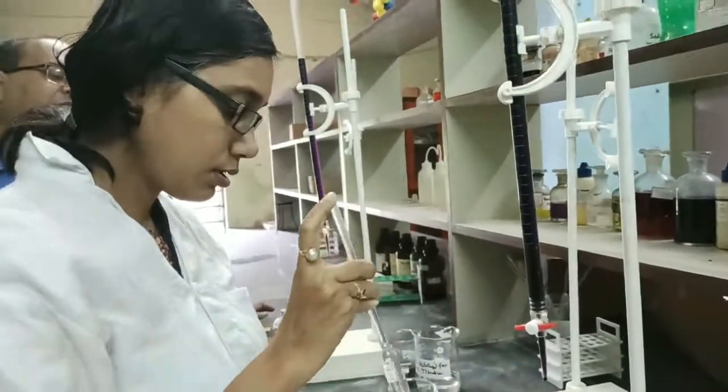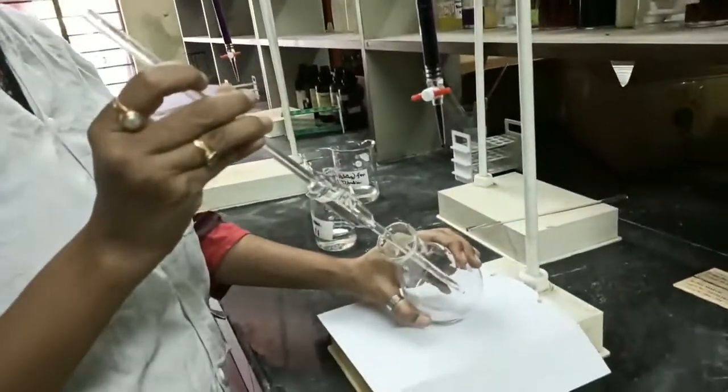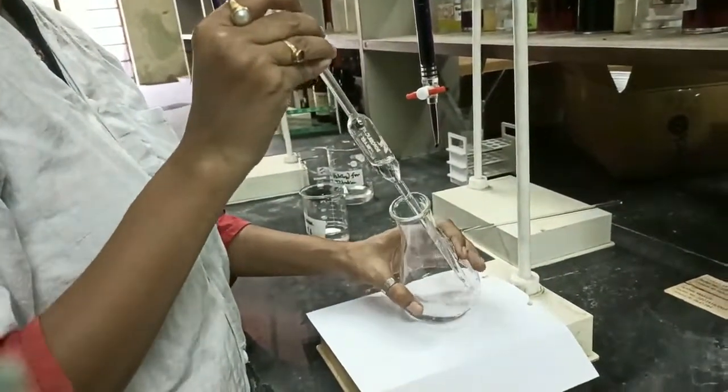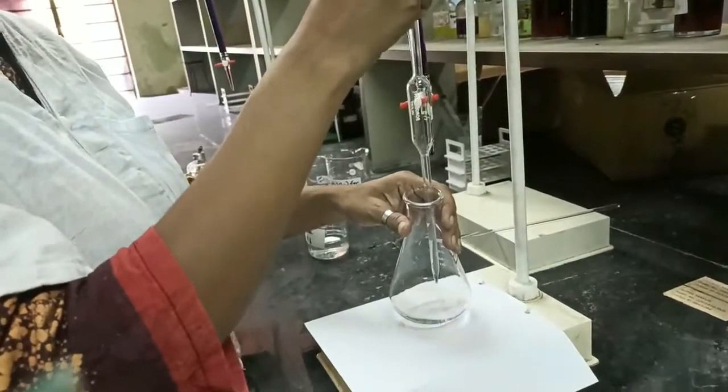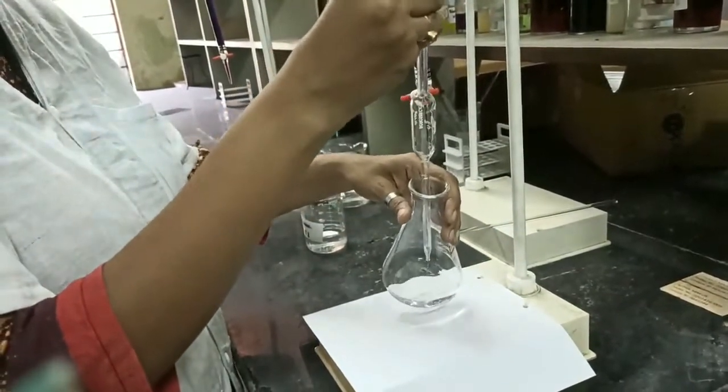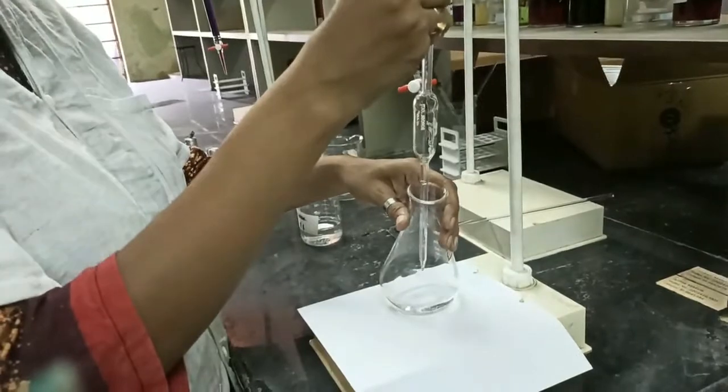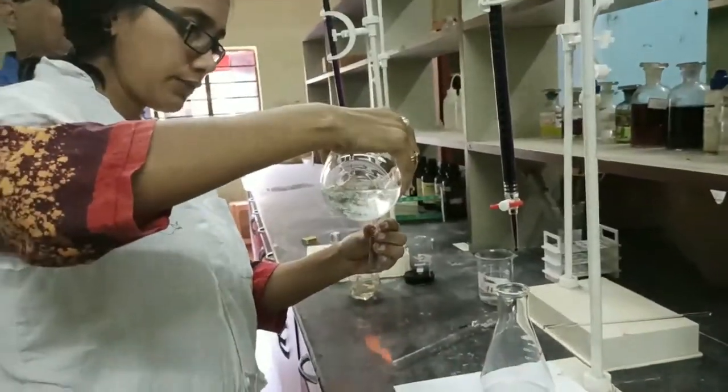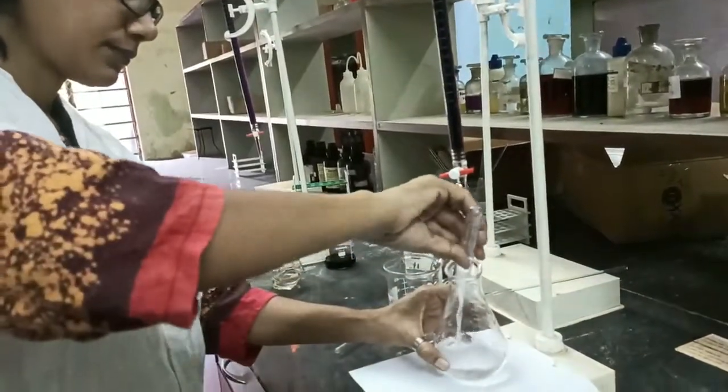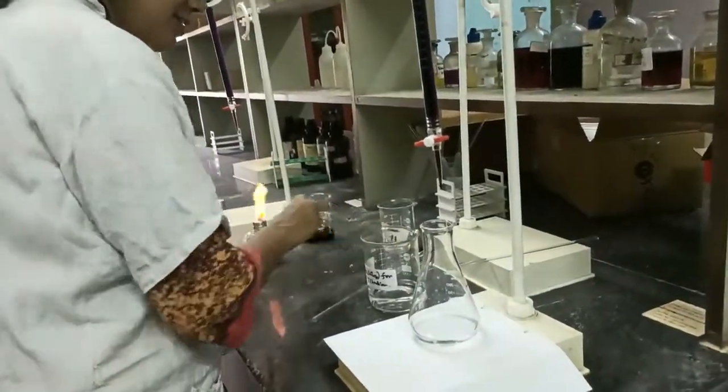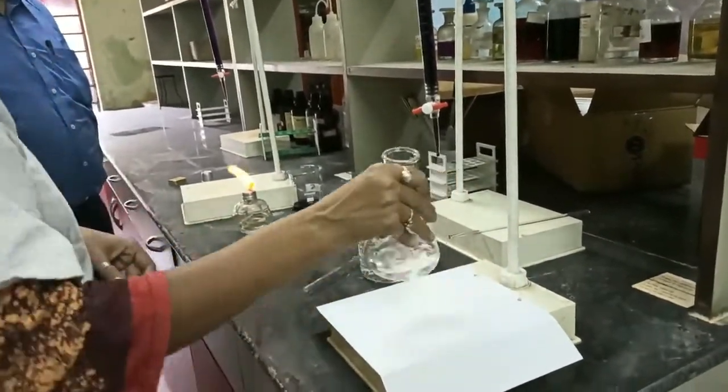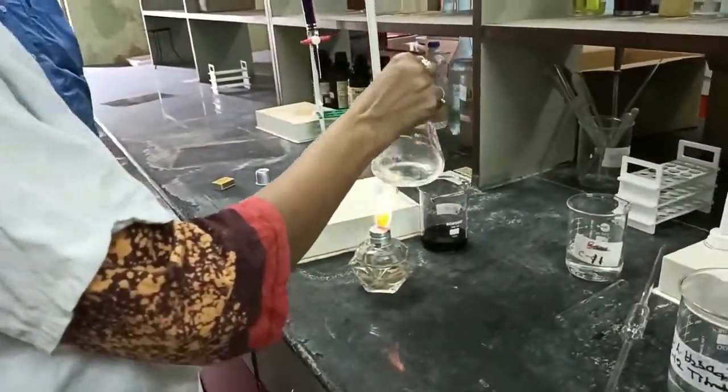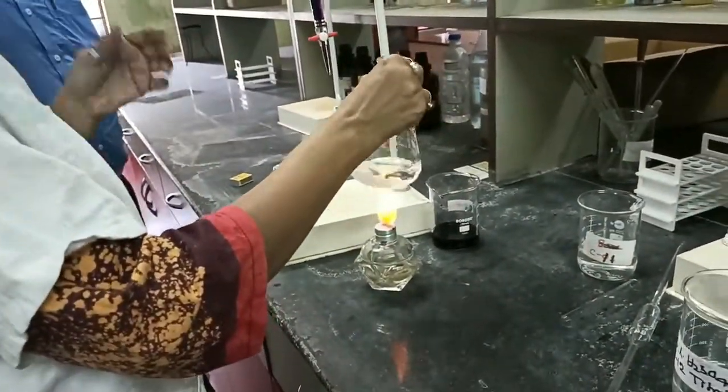The reaction is acid catalyzed. So we are taking one test tube of dilute sulfuric acid and adding it to the oxalic acid solution. Now we need to heat the solution to approximately 60 to 70 degree centigrade. We will be continuing warming the solution till it is unbearable to touch.